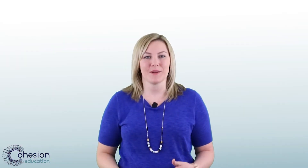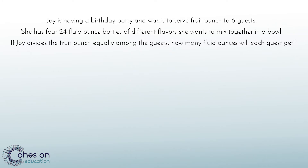Before we begin to solve our multi-step problem, let's first code the problem to gain a full understanding of what is being asked of us to solve. Our problem reads: Joy is having a birthday party and wants to serve fruit punch to six guests. She has four 24 fluid ounce bottles of different flavors she wants to mix together in a bowl. If Joy divides the fruit punch equally among the guests, how many fluid ounces will each guest get? To begin coding this problem we will underline the question to understand what we are looking for. We will underline 'how many fluid ounces will each guest get.' This statement tells us that our answer will be in fluid ounces — we are looking for an amount of punch each guest will get.